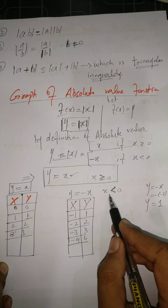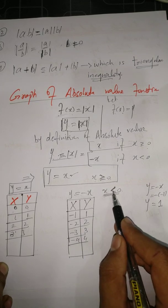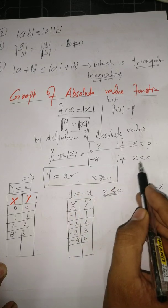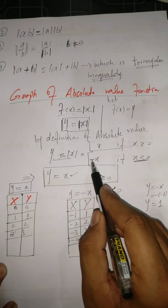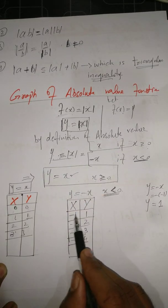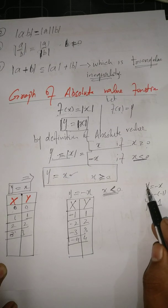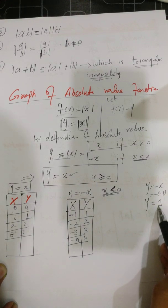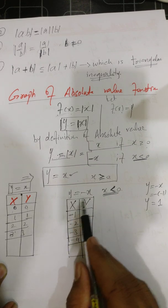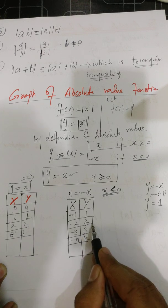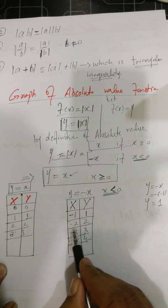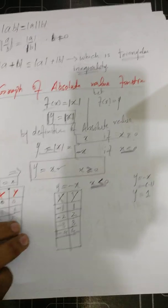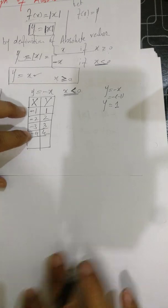The second part of the definition is y = -x, and the input should be less than 0, since the value inside the mod should be negative. So if we put -1, it gives us +1: minus times minus one is positive one. For -1 the output is 1, for -2 the output is 2. Now we can draw the graph of this absolute value function.